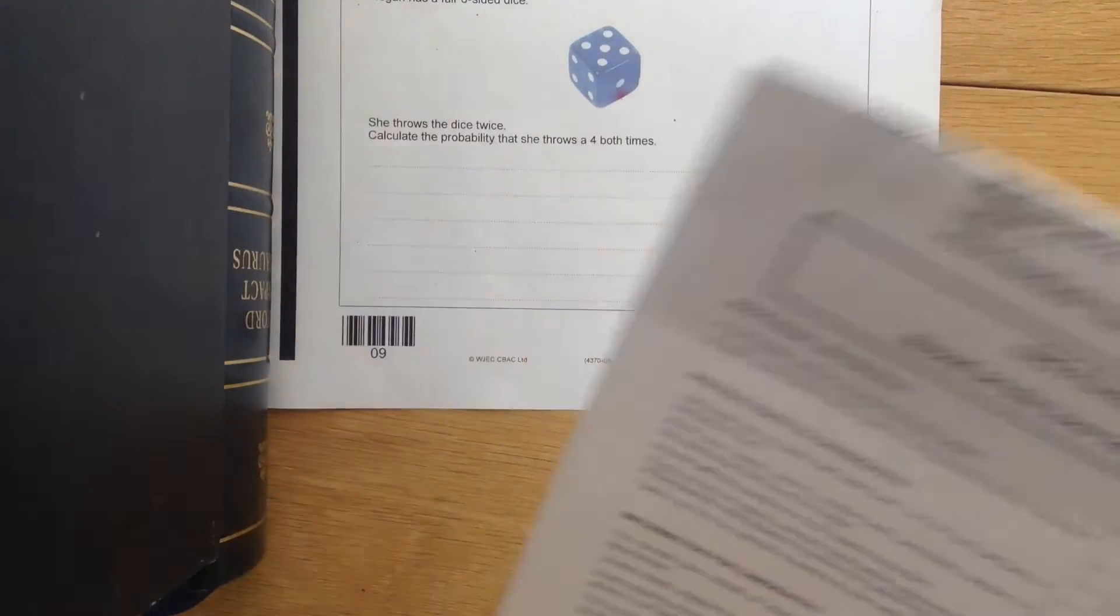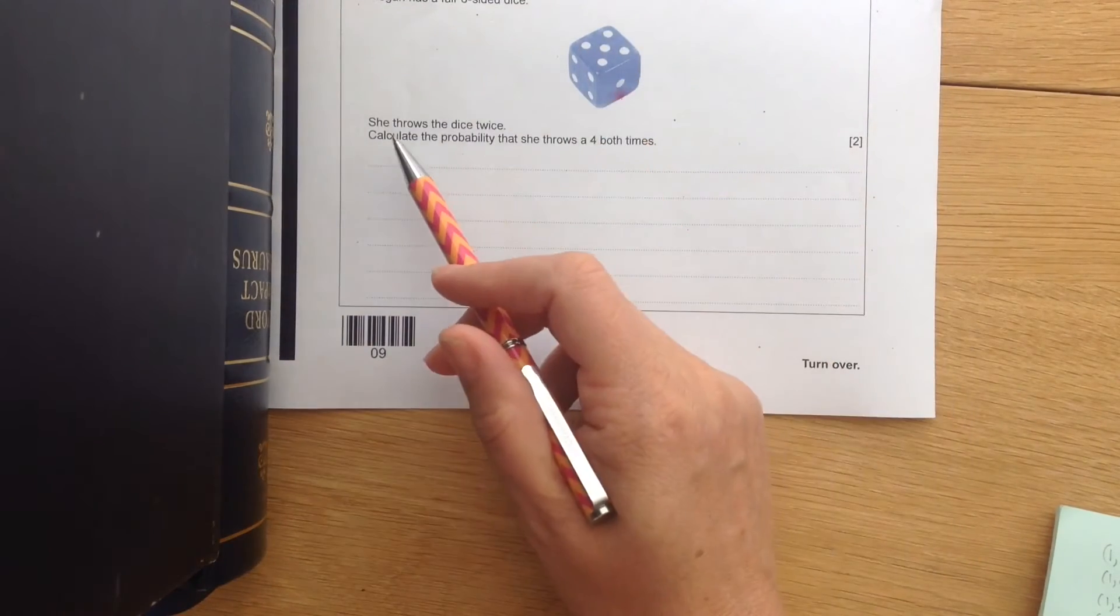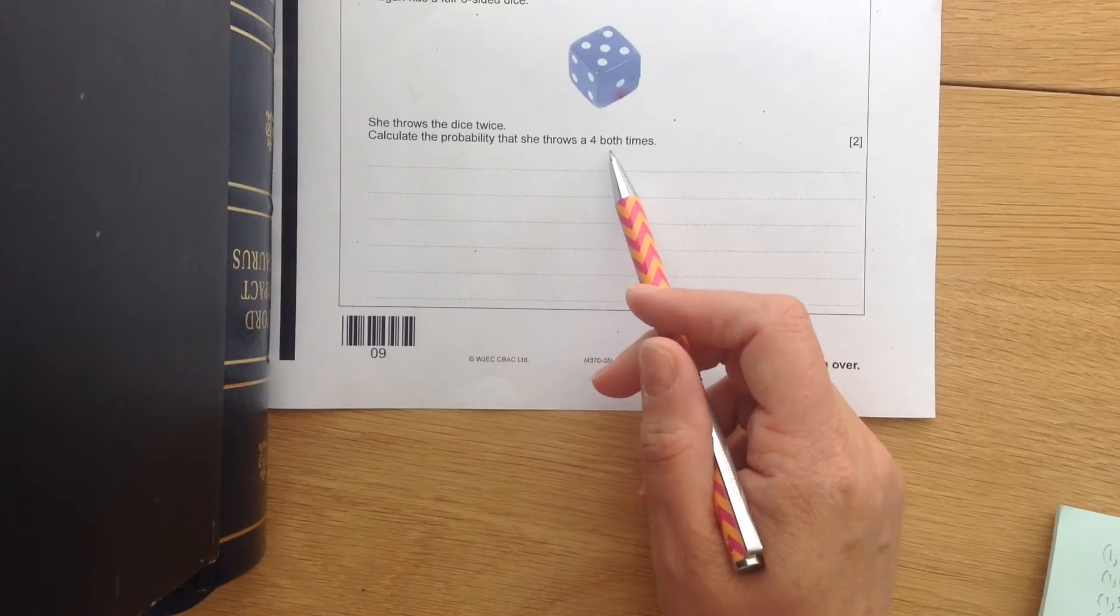Question 10. Megan has a fair six-sided dice. She throws the dice twice. Calculate the probability that she throws a four both times.